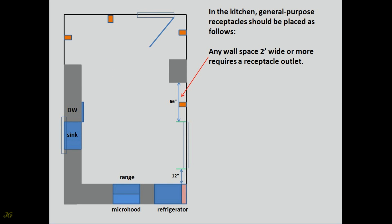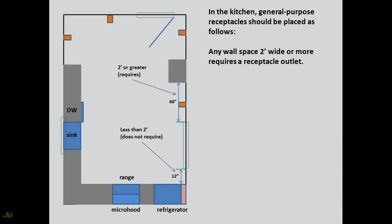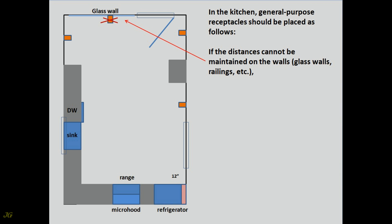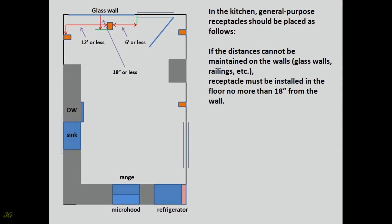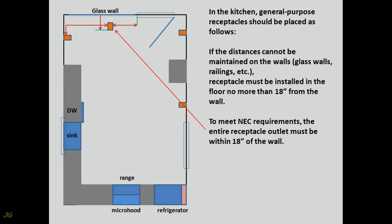Any wall space 2 feet wide or more requires a receptacle outlet. If the required distances cannot be maintained on the walls — such as glass walls, railings, etc. — a receptacle must be installed in the floor no more than 18 inches from the wall. To meet NEC requirements, the entire receptacle outlet must be within 18 inches of the wall.